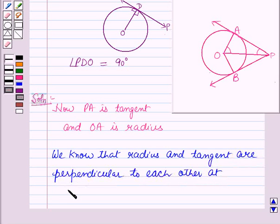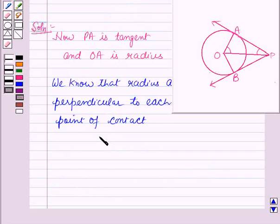At the point of contact, which is A, angle OAP is equal to 90 degrees.